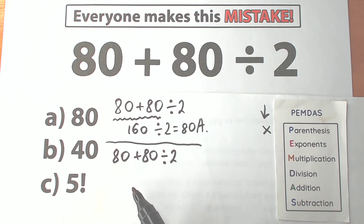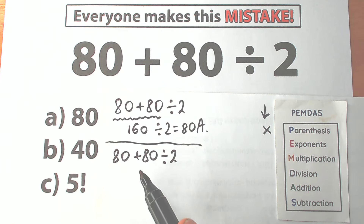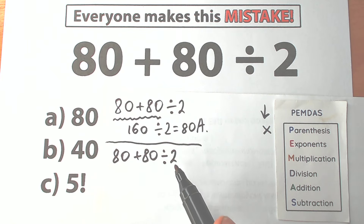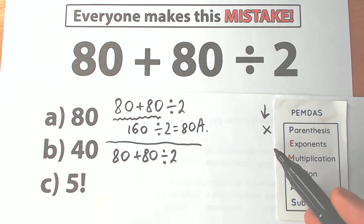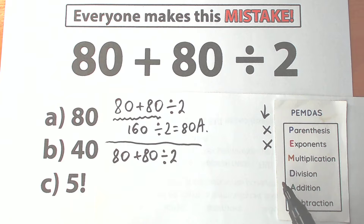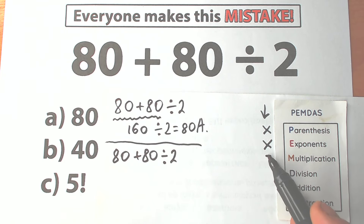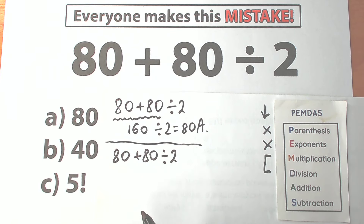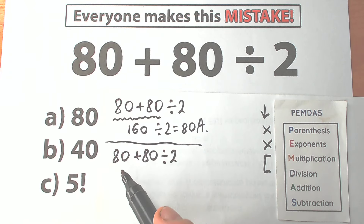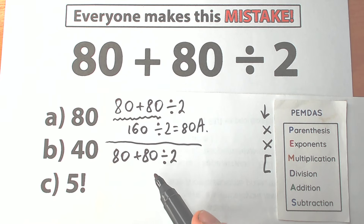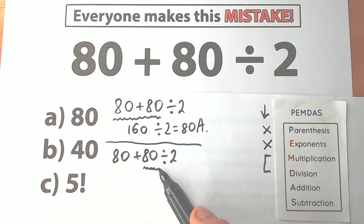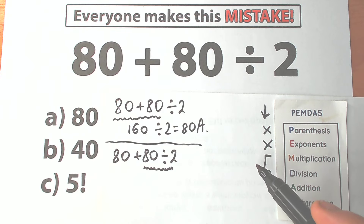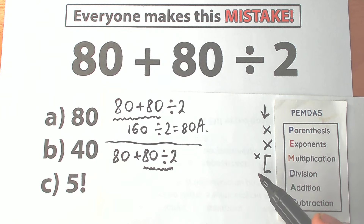Next is Exponents. Do we have any exponents? I don't see any, so we skip this part as well. What about the Multiplication and Division group? Let's look at where we have multiplication and division signs. Right here we have addition and we also have a division sign, so we need to address that expression. We don't have any multiplication, but we do have the division group right here.